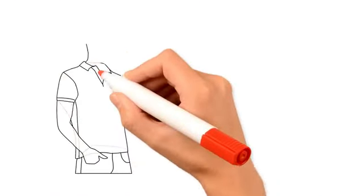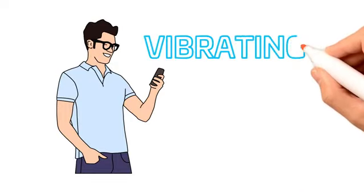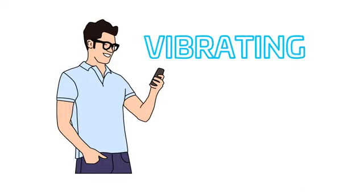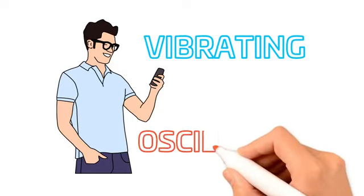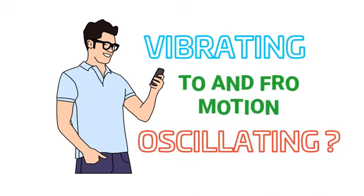Now here is a very important question: why do you always say that your cell phone is vibrating? Why do we not say the cell phone is oscillating? To learn this, you must learn about to and fro motion.